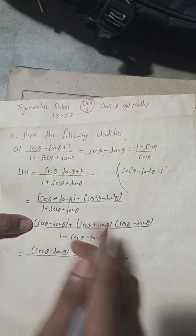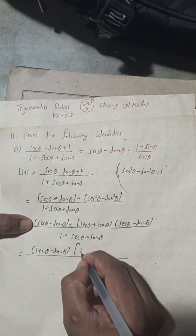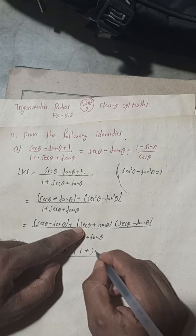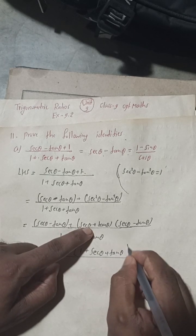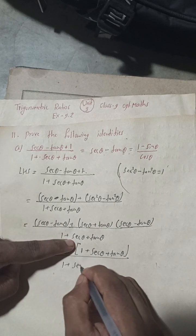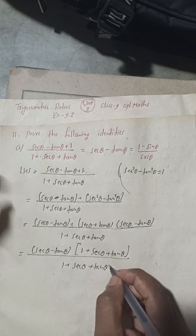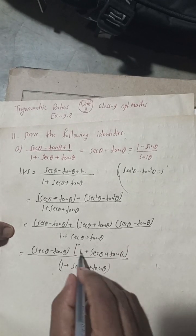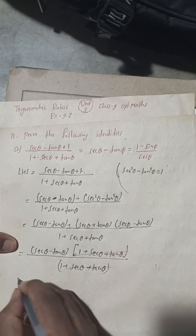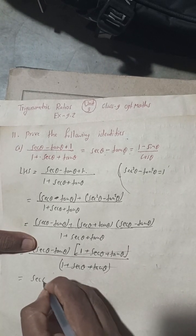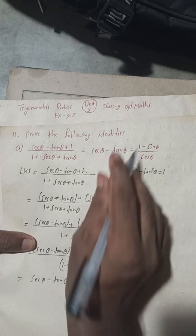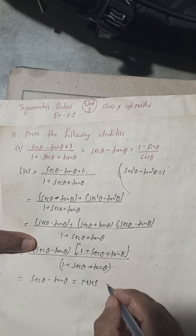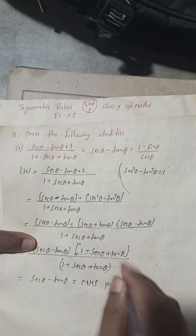After taking sec θ − tan θ as common, we have 1 remaining plus (sec θ + tan θ), giving (sec θ − tan θ)(1 + sec θ + tan θ) in the numerator. The denominator is also (1 + sec θ + tan θ), so we can cancel both parts. We get sec θ − tan θ, which equals the MHS. So the middle part is proved.